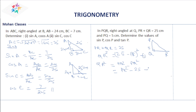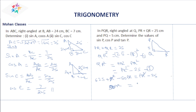After cancelling PR², we get 50·PR = 650, so PR = 13. Then QR = 25 − 13 = 12. Now we have all three sides: PQ = 5, QR = 12, PR = 13.